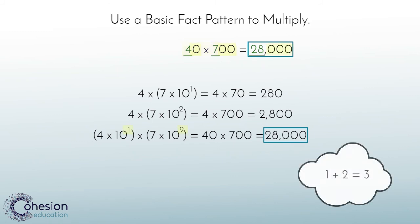There is a relationship between the number of zeros in our answer, 28,000, and the last power of 10 in our pattern. We ended at the third power of 10 and 28,000 has three zeros.